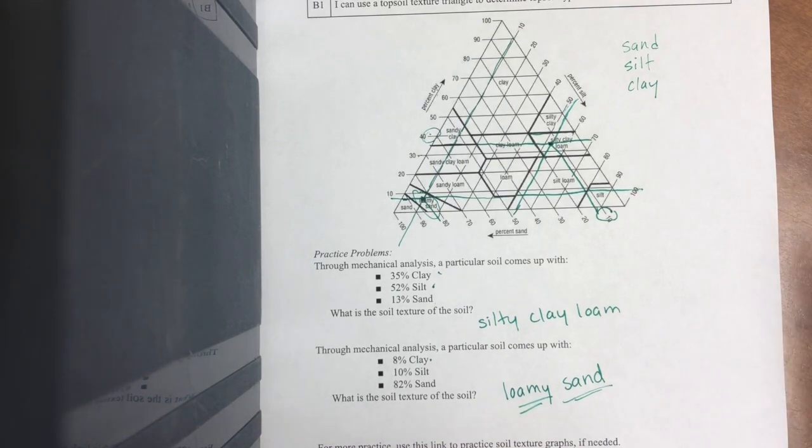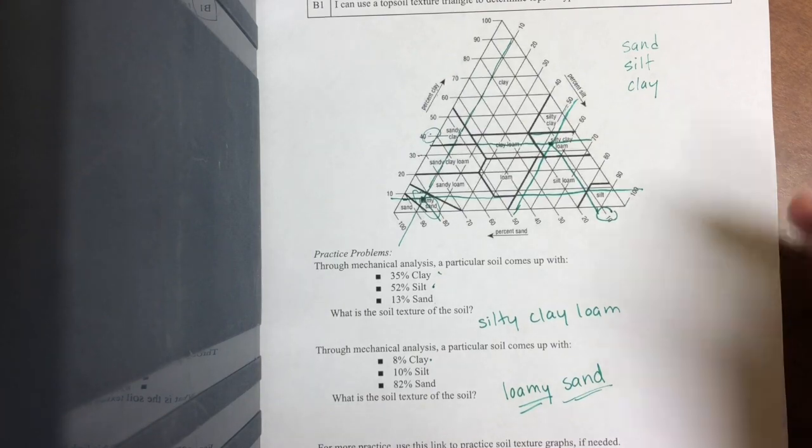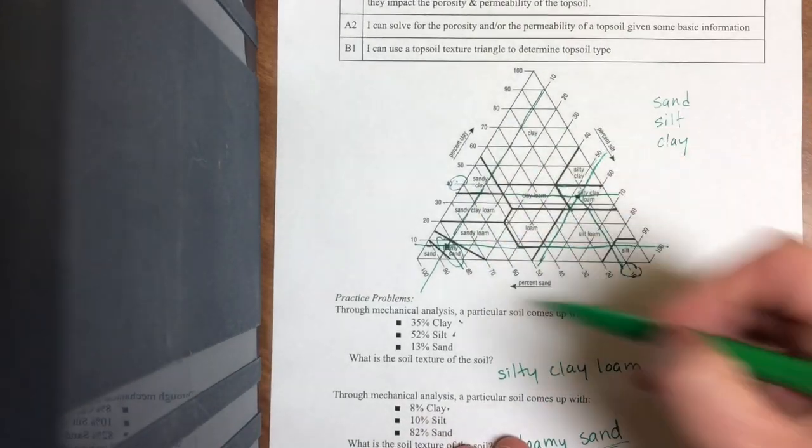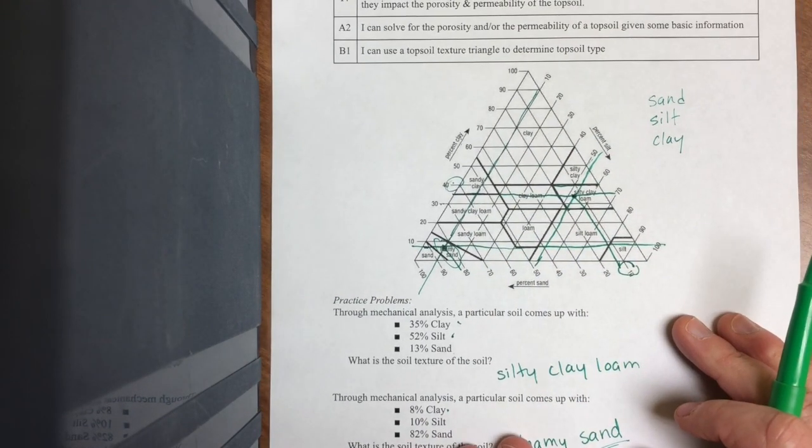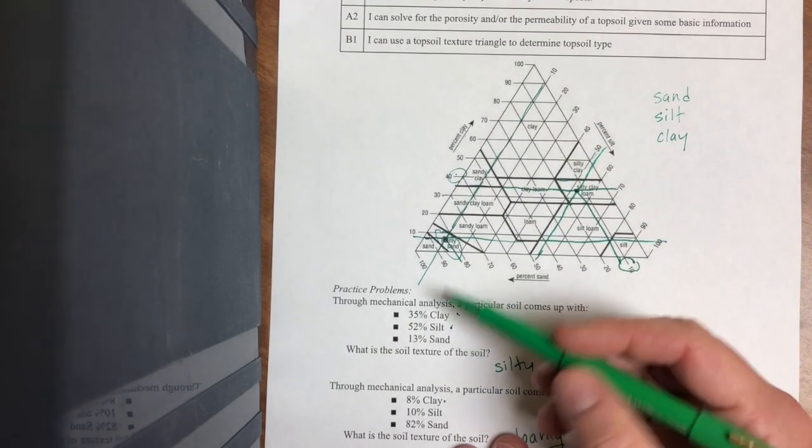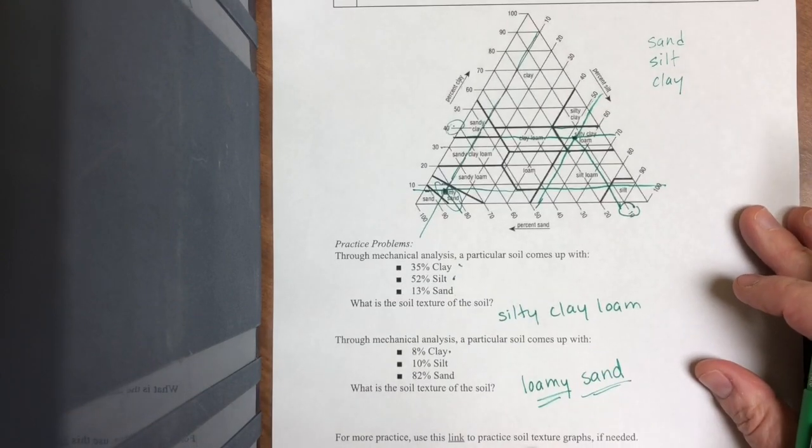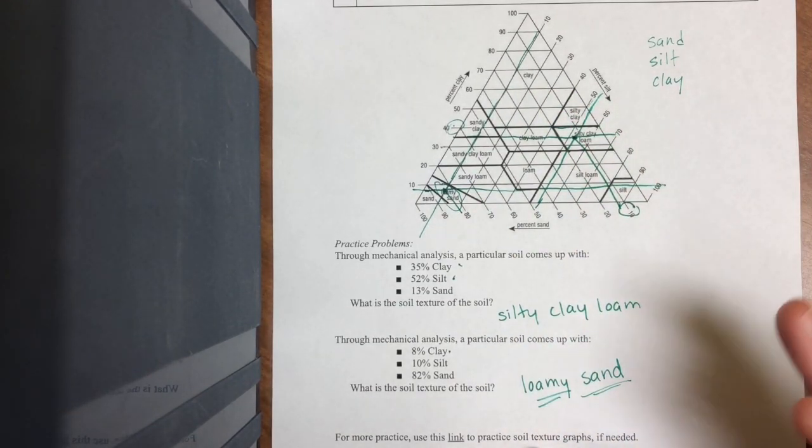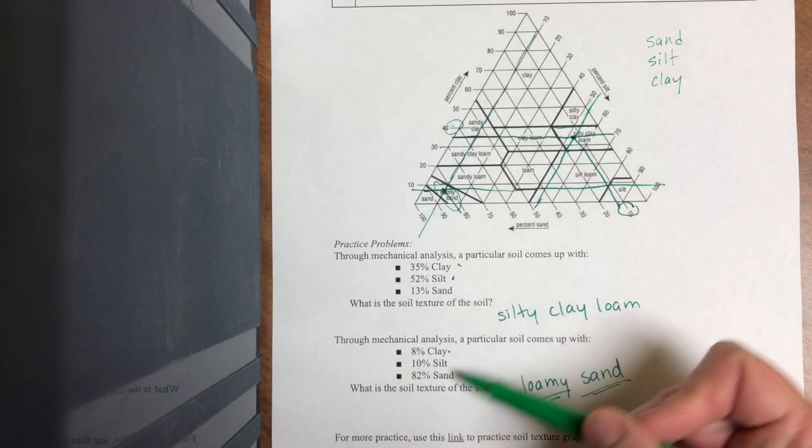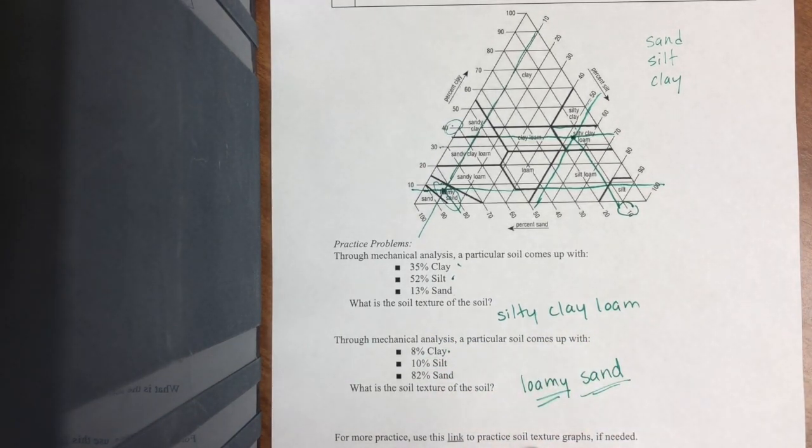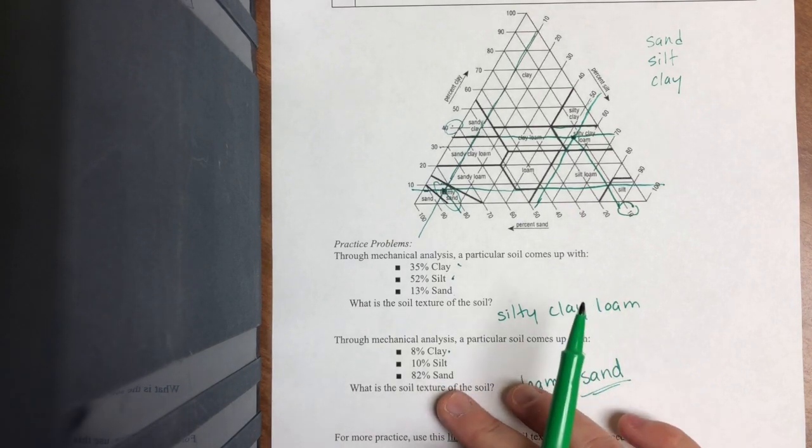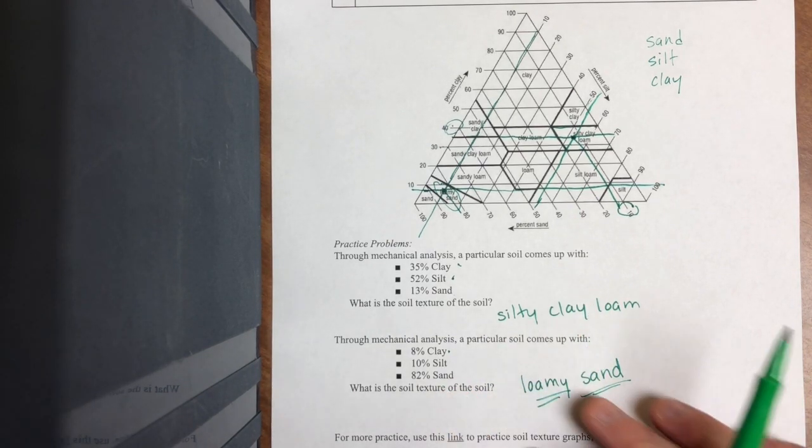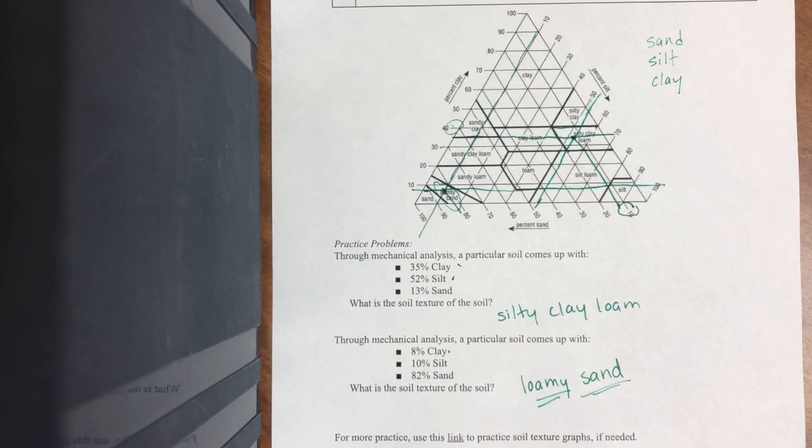And so this is some of the information that you need to be able to use this graph, given the information, and figure out the soil texture. And really, probably do a reasonable check of what the texture is. So if I did this, I read this graph, and I got it was a silty clay, that would tell me I probably read something wrong on the graph. So do a logic check, because the names actually make sense based on the percentages.